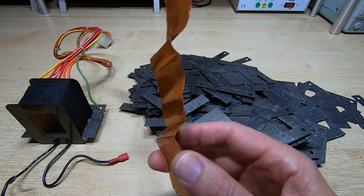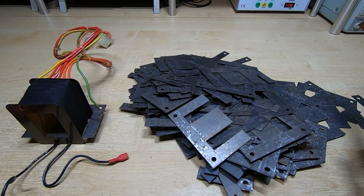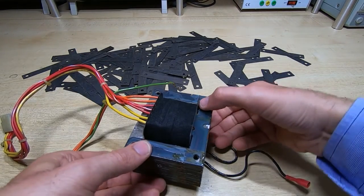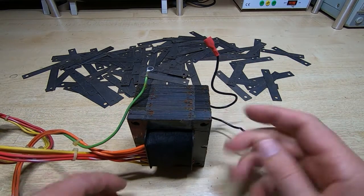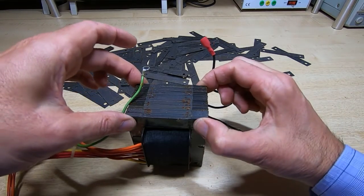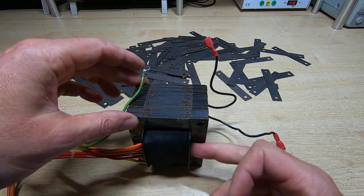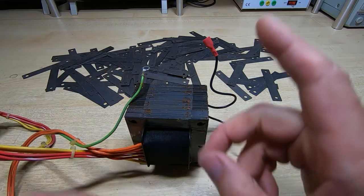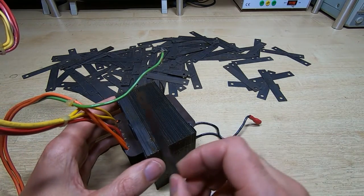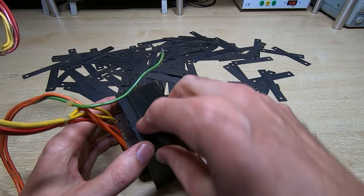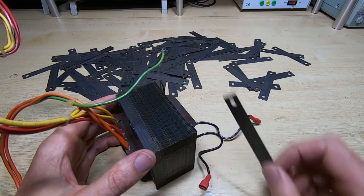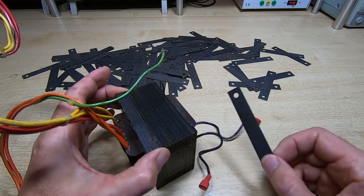That's all the laminations in place. As ever, the last few were quite a snug fit in the core. If you remember there was a gap at the end of the core when I took this apart and this will compress slightly when we put the clamping screws in. Now we've got the E pieces in, the next thing to put in place are the I pieces. It's just really a case of working our way along and slotting each of these in place and pushing them down.